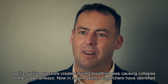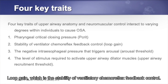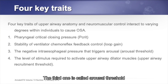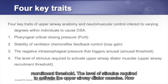In recent years, researchers have identified four different phenotypes. These are: PCRIT, which is the pharyngeal critical closing pressure; loop gain, which is the stability of ventilatory chemoreflex feedback control; arousal threshold, the negative intraesophageal pressure that triggers arousal; and upper airway recruitment threshold, the level of stimulus required to activate the upper airway dilator muscles.